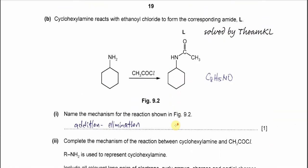Part B: cyclohexylamine reacts with ethanoyl chloride to form an amide. This is a condensation reaction and the name of the mechanism is nucleophilic addition-elimination — you just need to state 'addition-elimination'.